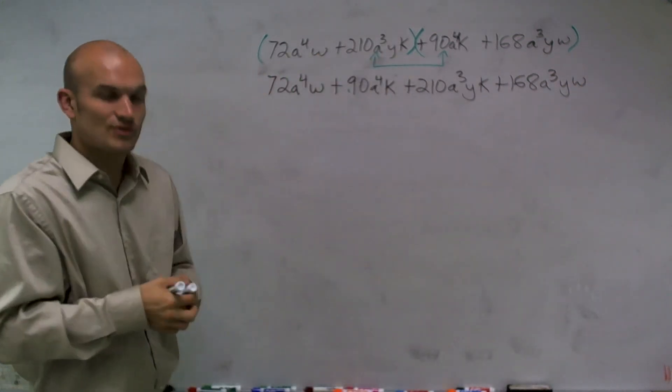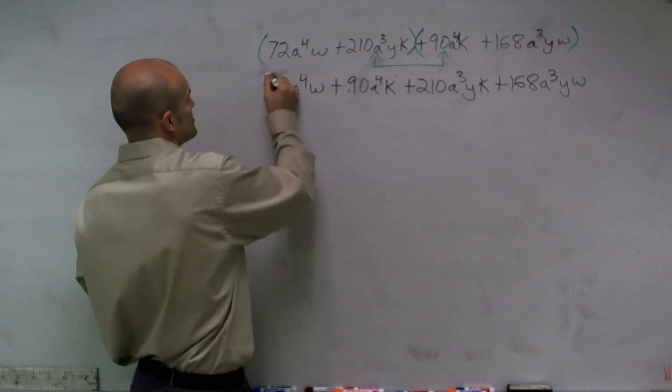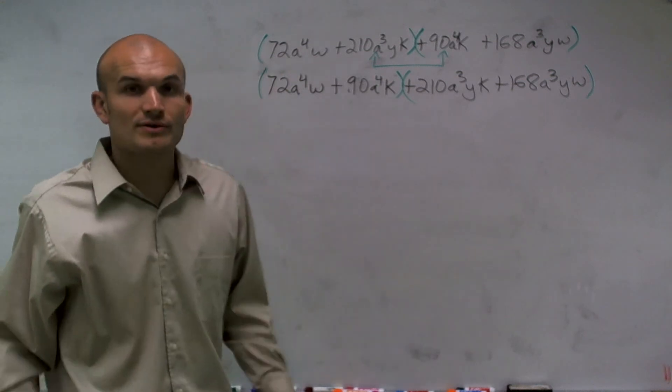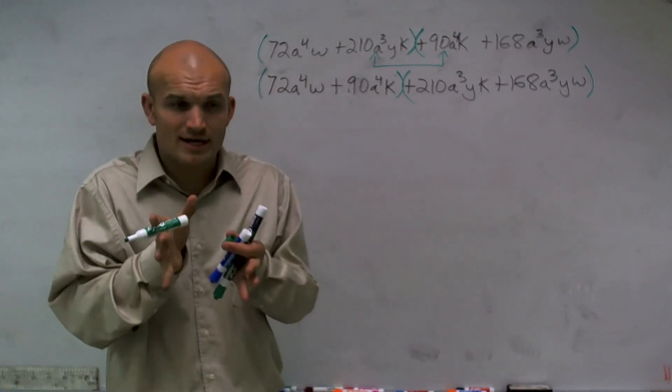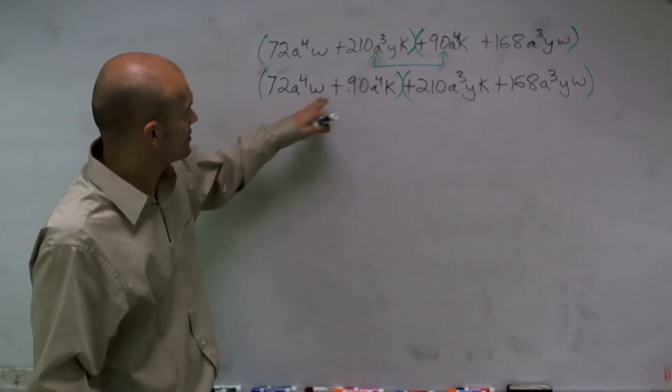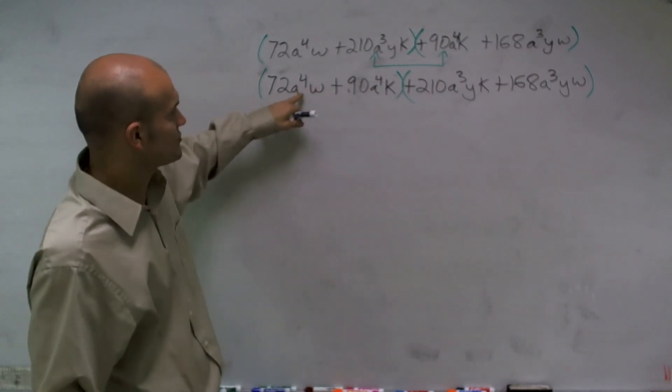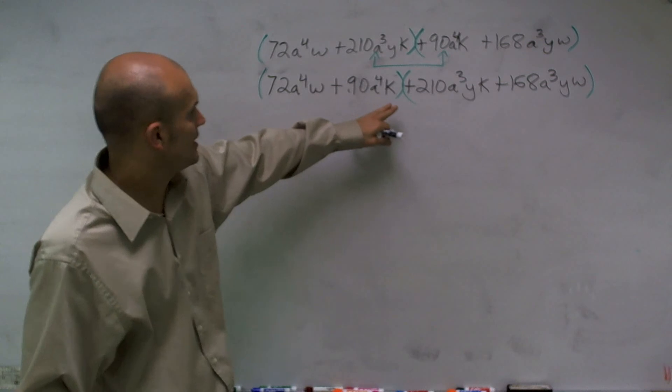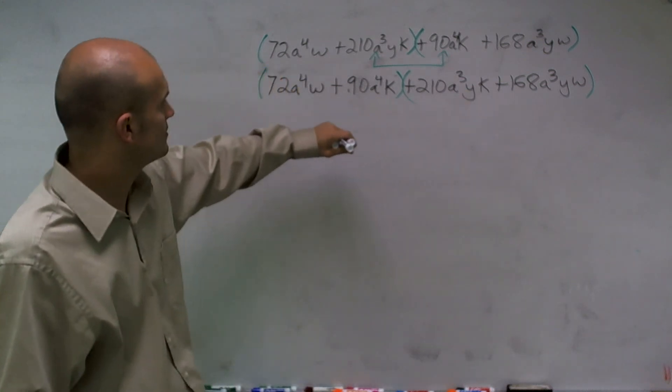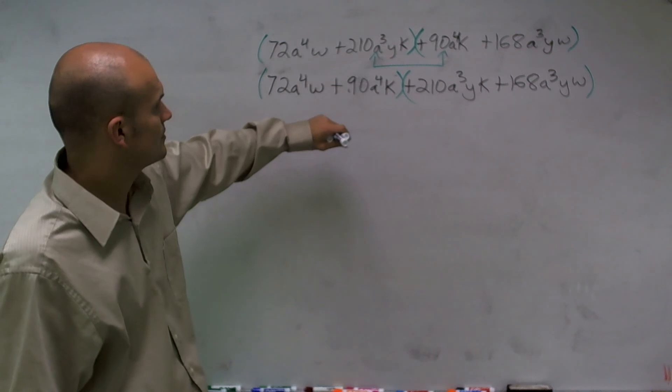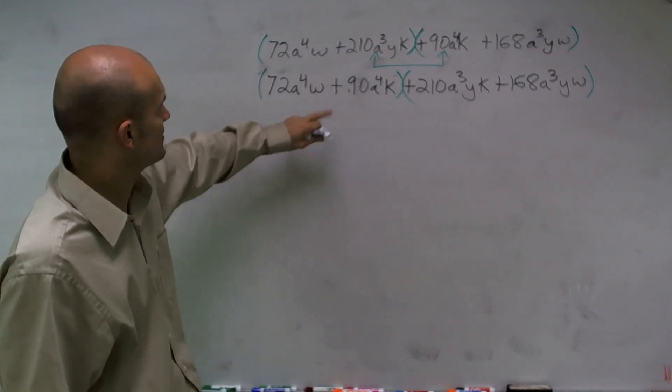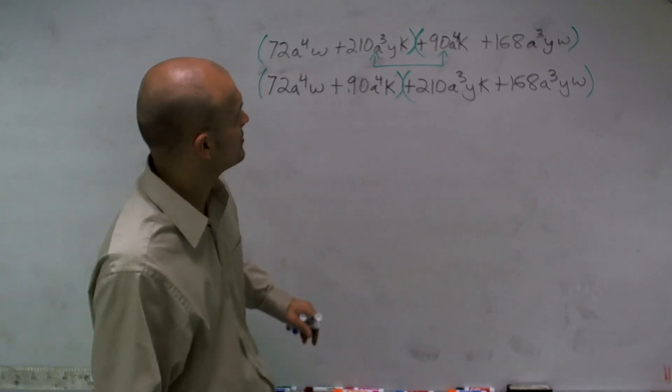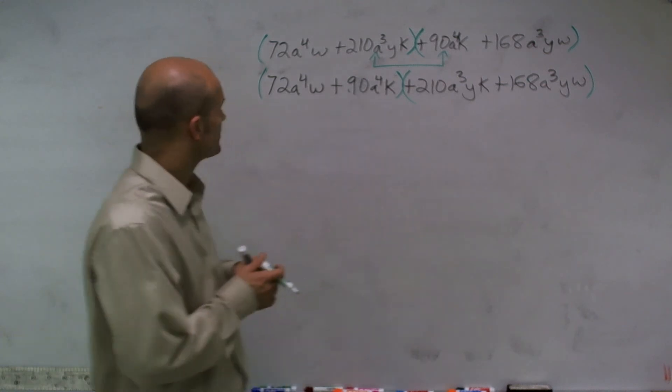So now, let's just do this again and see if it works. I'll group my first two terms again, and I'll group the last two terms. Now what I'm going to do is work on factoring out the GCFs. If I factor out my GCF from the first group, it would be an a⁴, and from the second group it would be an a³y.